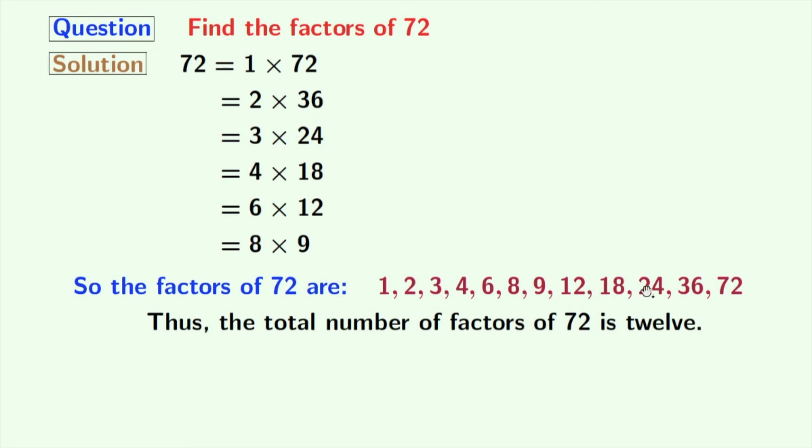Now, if we look at these factors, we can see that 2 and 3 among these numbers are prime numbers because these two numbers do not have any divisor other than 1 and that number itself. So, we can say that the prime factors of 72 are 2 and 3.